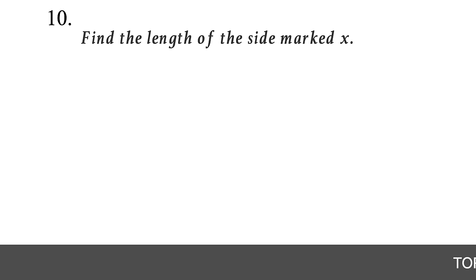Question 14. Find the slope of a line that passes through the points (2, 4) and (6, 5). To find the slope given two points, use the slope formula: m = (y₂ - y₁) ÷ (x₂ - x₁). Calling (2, 4) point 1 and (6, 5) point 2: x₁ = 2, y₁ = 4, x₂ = 6, y₂ = 5. We have m = (5 - 4) ÷ (6 - 2) = 1 ÷ 4. So the slope is 1/4.